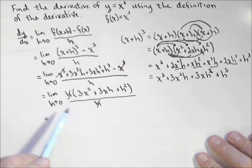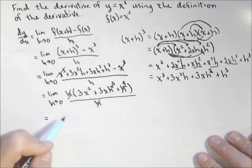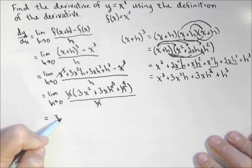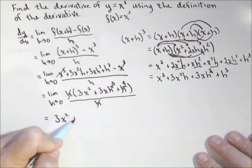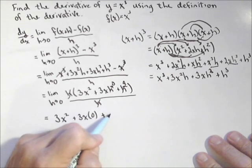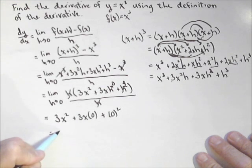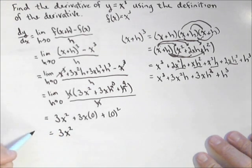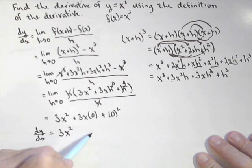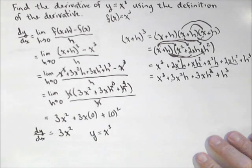I can plug in zero for h. So this h is going to become a zero, and so is this h. So what I'm going to get is 3x² plus 3x times zero plus zero squared. Or that my derivative is simply 3x². So dy/dx, or y prime, depending on the notation you used, is 3x², which is the derivative of x cubed.